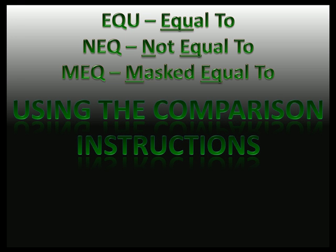The next three instructions in this group of comparison instructions are: equal to, not equal to, and mask equal to. The first two are very simple instructions. The mask equal, once you come to understand the behavior of a mask within an instruction between a source and destination, is also very simple. The equal instruction is either equal to a value or it's not equal to the value — if it's equal, it's true; if it's not equal, it's false.